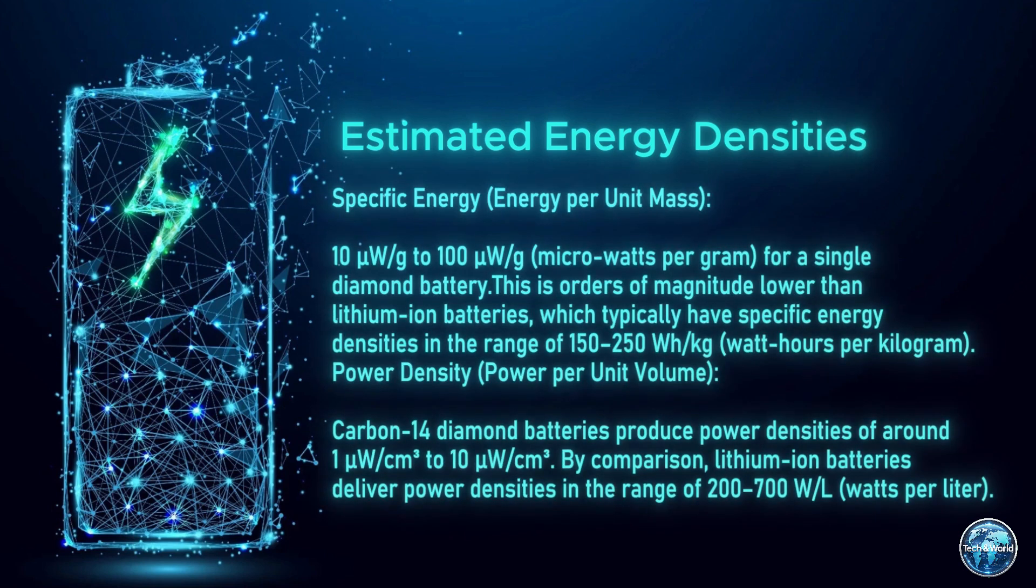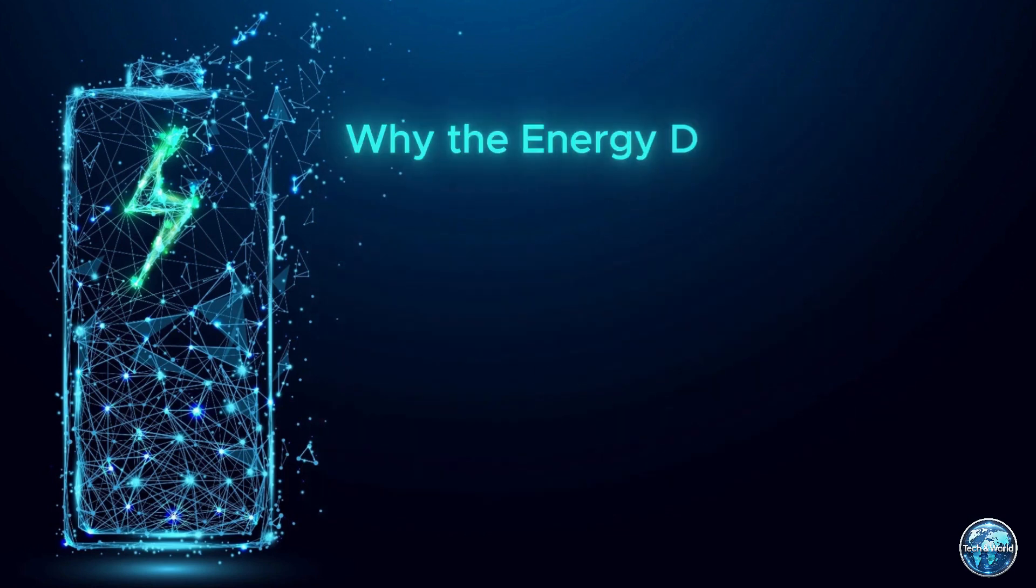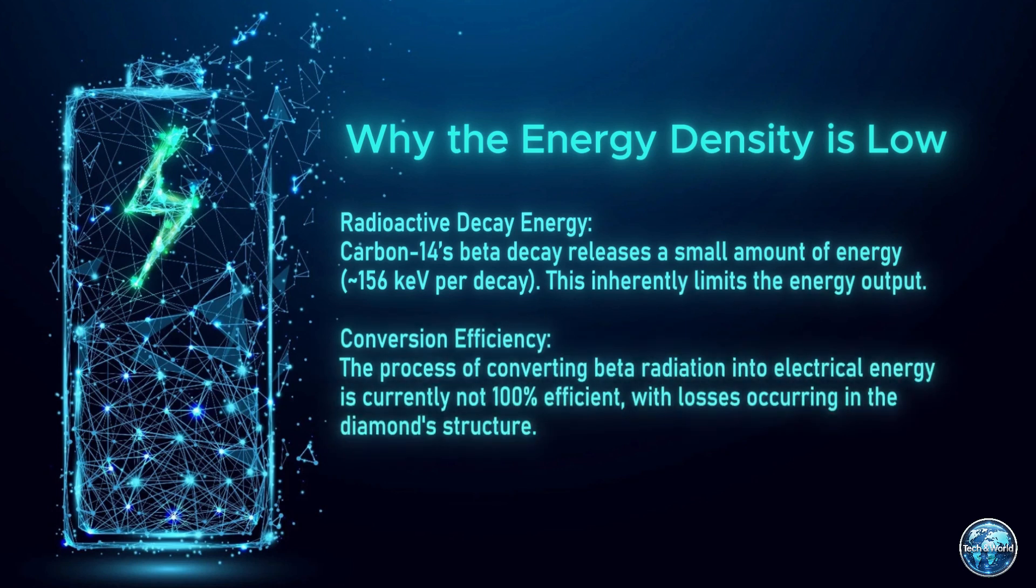The carbon-14 diamond battery has low energy density. In simple terms, it doesn't produce a lot of power. For example, a lithium-ion battery can power your phone, but a single carbon-14 diamond battery can only generate a few microwatts of energy.